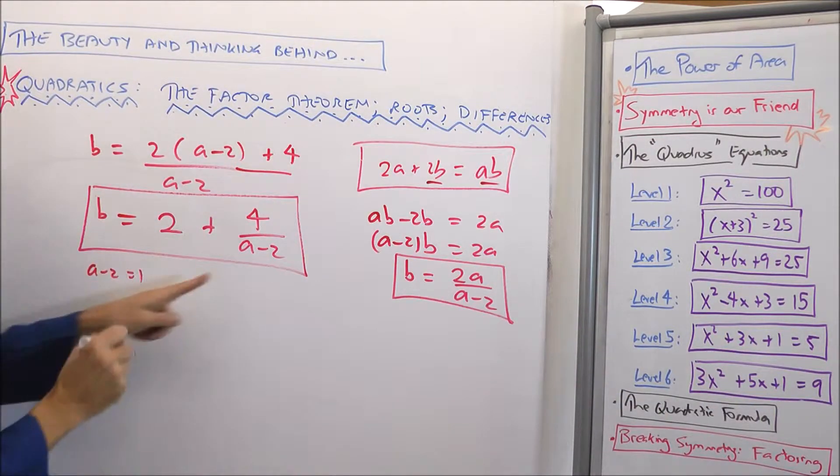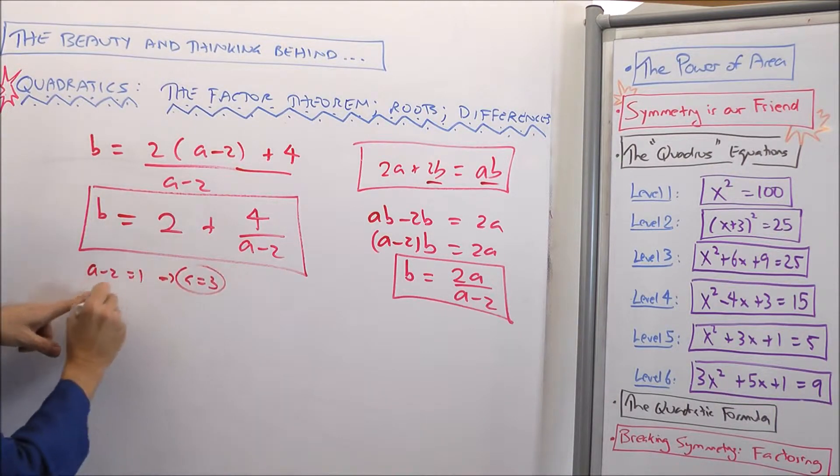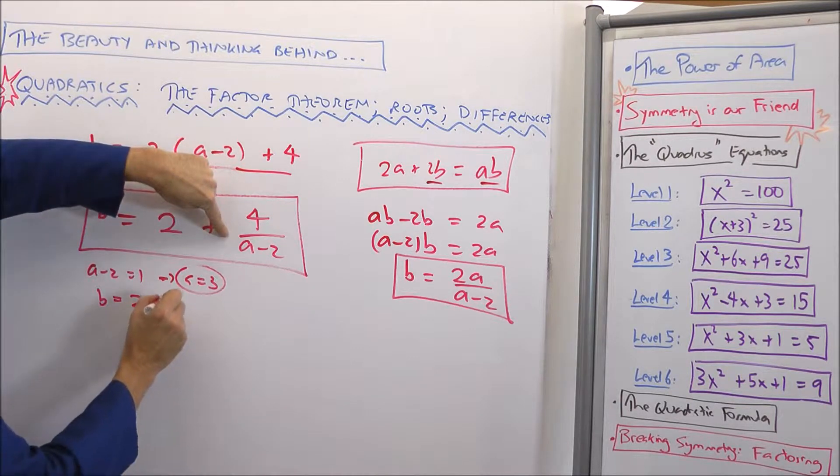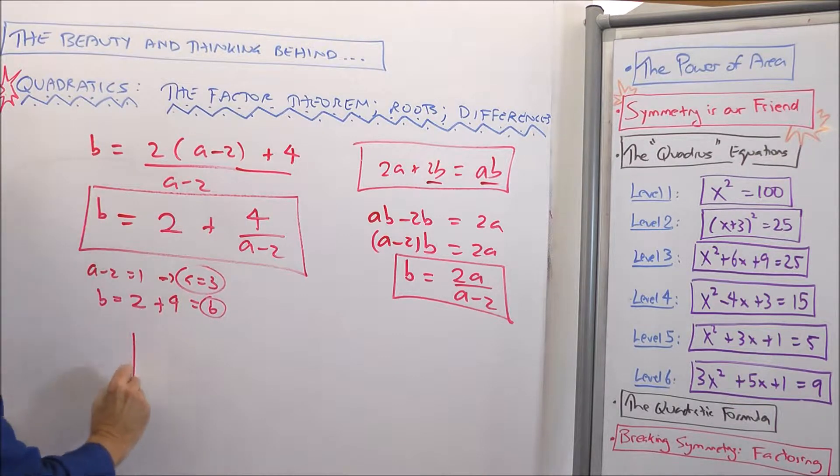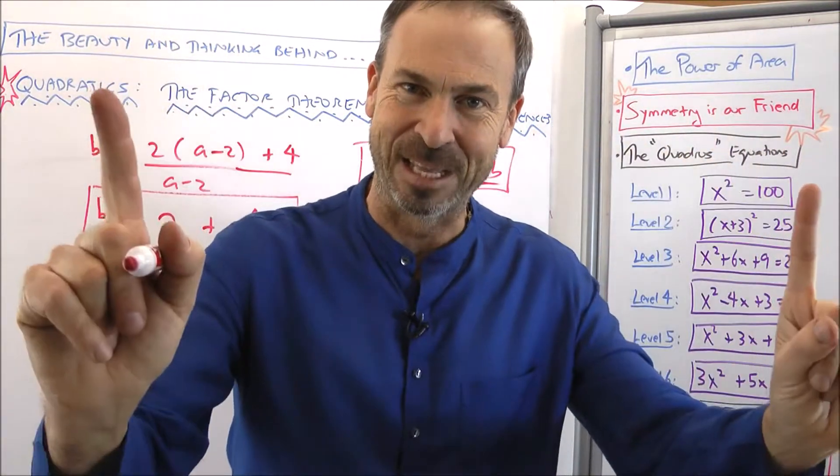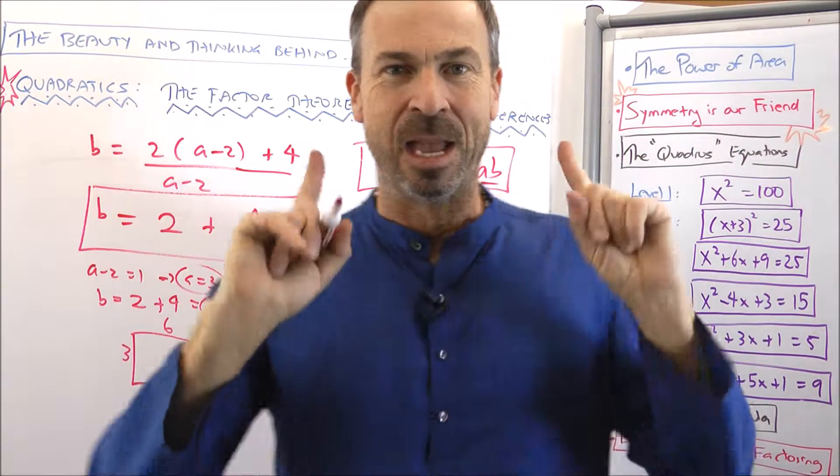If (a - 2) is 1, then a is 3. But then more importantly, b is going to be 2 + 4/1, which is 6. Oh, that is the example we had first off, a three by six rectangle. Bingo. That's fitting the equation. Perimeter and area have the same value and I've got integers.